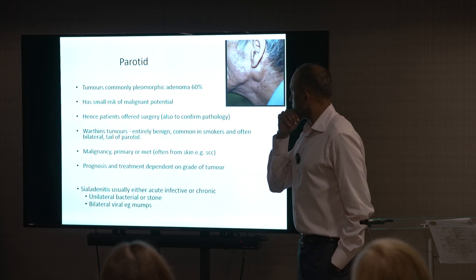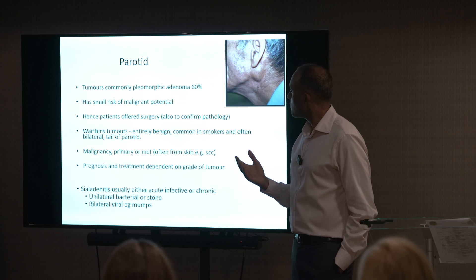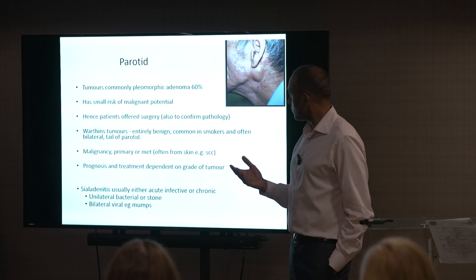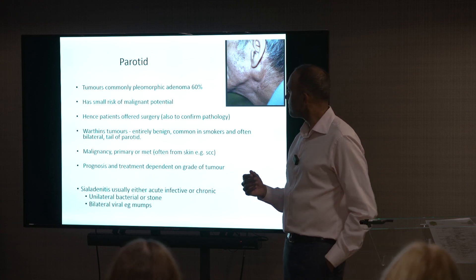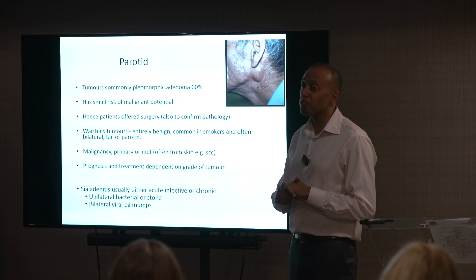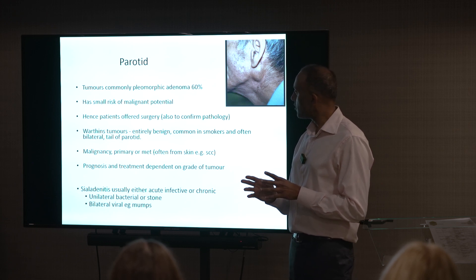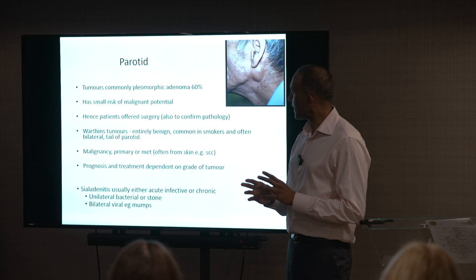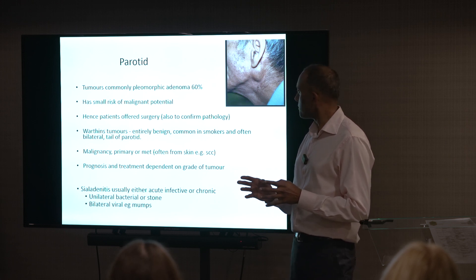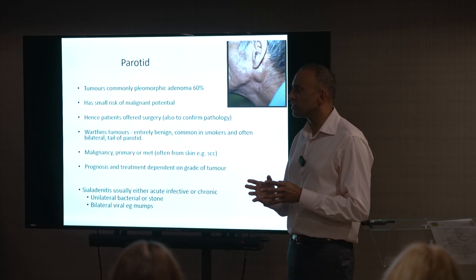In the parotid, these are the common things we'll see. The majority — at least two thirds — are going to be pleomorphic adenomas, which are benign but are usually removed because of the risk of malignant transformation. The other benign tumour we see in the parotid is Warthin's tumour. These are often bilateral, commoner in smokers, and clinically are going to be very difficult to differentiate from any other type of tumour in the parotid.